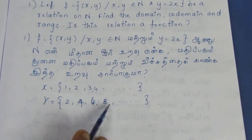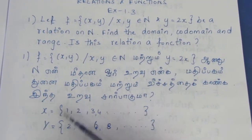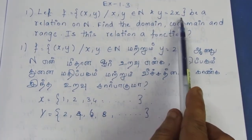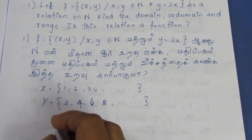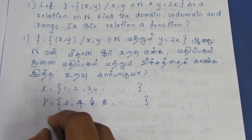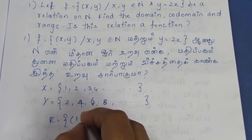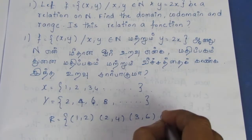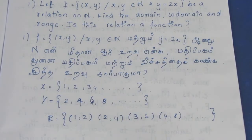Y is equal to 2, 4, 6, 8. I will substitute: when x=1, y=2; when x=2, y=4; when x=3, y=6; when x=4, y=8. So the ordered pairs (x,y) are: (1,2), (2,4), (3,6), (4,8). We choose natural numbers too.